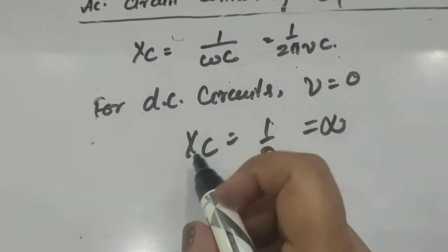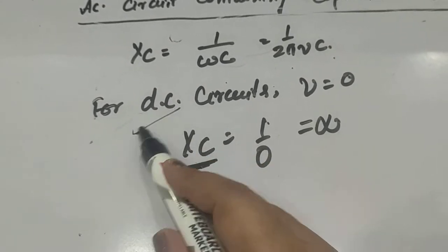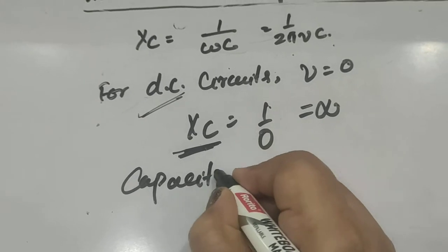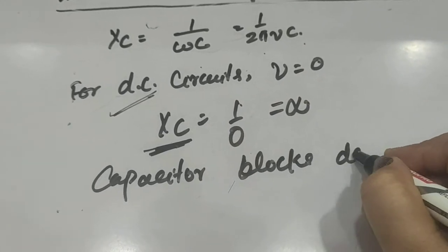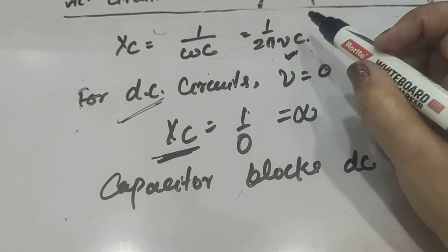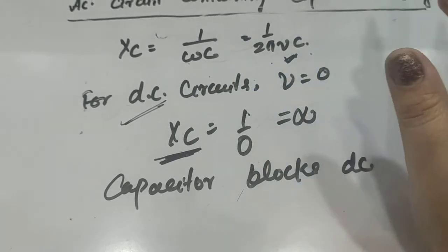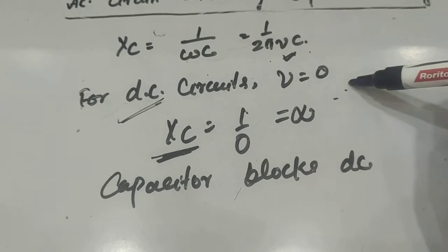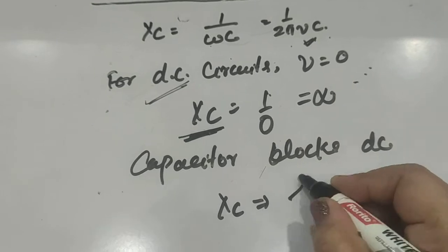...for DC, ν = 0, so Xc = 1/0 = ∞, meaning capacitive reactance blocks DC. The capacitor blocks DC. Since for AC it has some finite value of frequency, capacitive reactance is finite, so capacitor allows AC to pass.